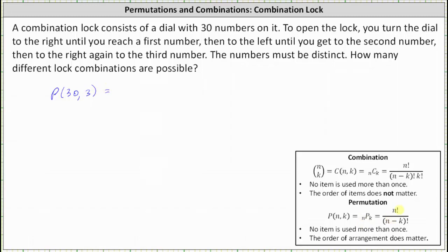n permute k is equal to n factorial divided by n minus k factorial, which indicates 30 permute 3 is equal to 30 factorial divided by 30 minus 3 factorial, which is equal to 30 times 29 times 28 times 27 factorial divided by 27 factorial.